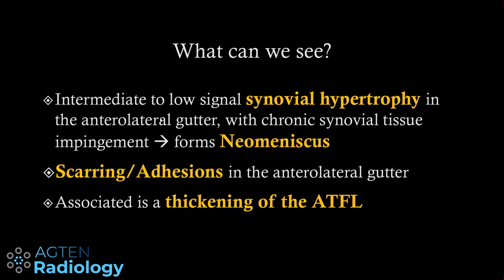What we are actually looking for is synovial hypertrophy in the anterolateral gutter, which can be seen as intermediate to low signal intensity within that space. If you have chronic synovial tissue that gets repetitively impinged, it can get quite dark and form what the literature calls a neomeniscus or meniscoid lesion — essentially a very scarred tissue plate from chronic synovial tissue impingement.